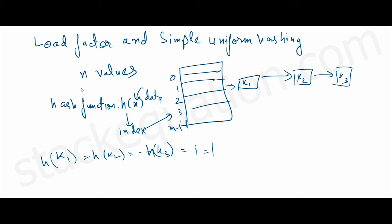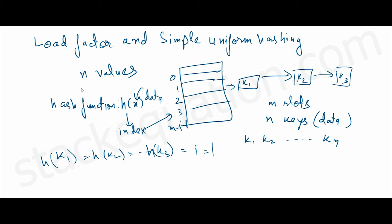So if we have m slots and n keys — the keys can be names of employees, products, or students — they will be spread across the m available slots in the table. Each key has an equal probability of being placed in any of the slots, which is 1 by m. So the probability that any value gets placed in any particular slot is 1 by m.